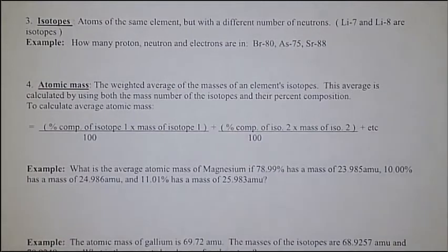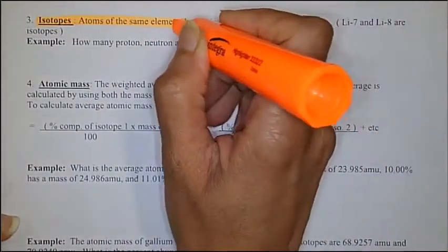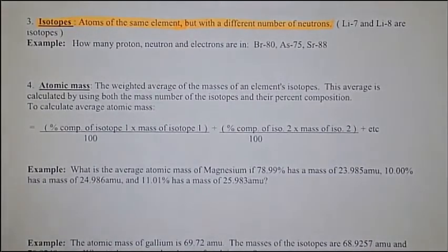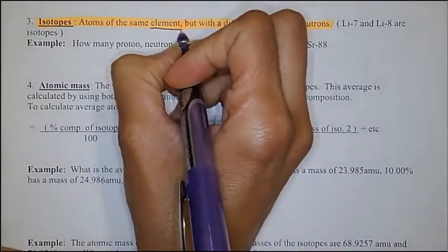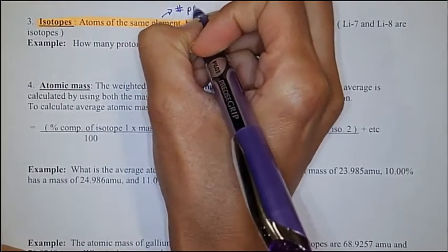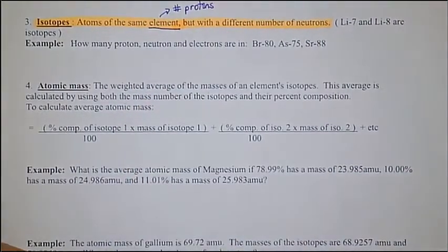Let's start off by talking about what isotopes are. Isotopes are atoms of the same element but they have a different number of neutrons. In the previous video, you learned that the element is defined by the number of protons — the number of protons actually identifies which element you are looking at.